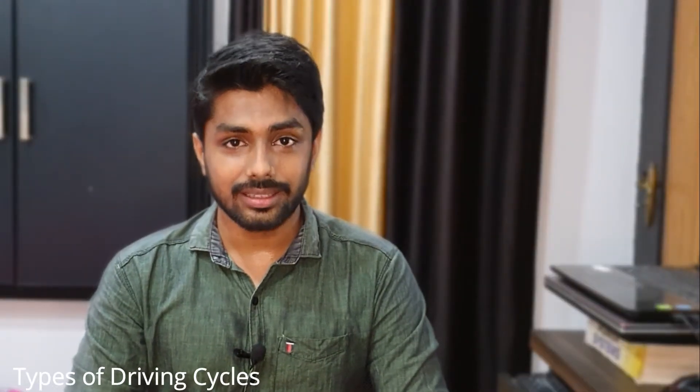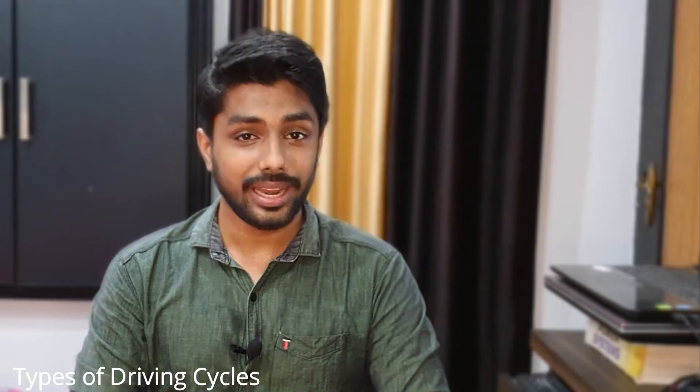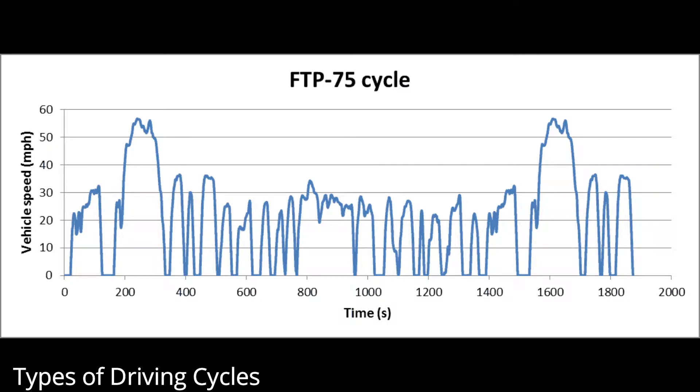The second type is the transient driving cycle, which represents the actual driving pattern of a vehicle and consists of acceleration, deceleration, constant speed, etc. The Federal Test Procedure is an example of a transient driving cycle. City driving cycles will have a lot of accelerations, decelerations, and stops, whereas highway drive cycles will have constant or high speed for a long time.